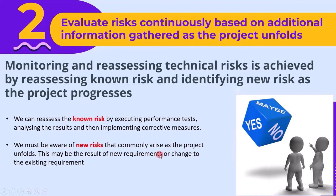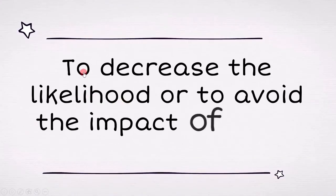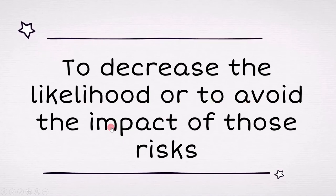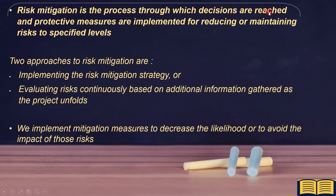The reason we perform risk mitigation is to implement mitigation measures to decrease the likelihood or to avoid the impact of those risks. In summary: risk mitigation is the process through which decisions are reached and protective measures are implemented for reducing or maintaining risks to specified levels. Two approaches are: implementing the risk mitigation strategy, or evaluating risks continuously based on additional information gathered as the project unfolds.